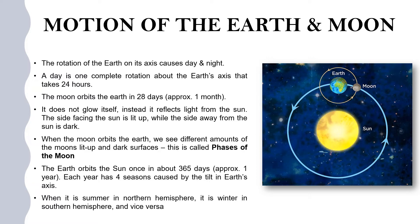The Earth orbits the Sun once in every 365 days, which is almost a year. So each year has 4 seasons. These seasons are caused by the tilt of the Earth's axis.